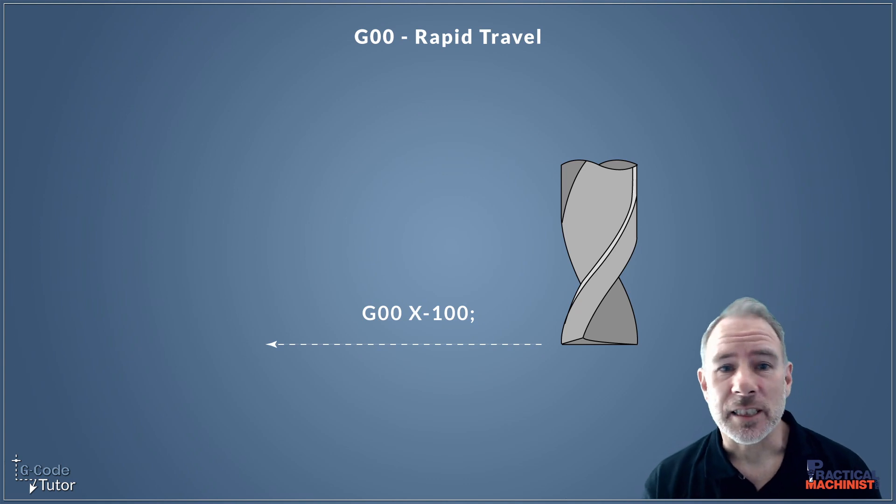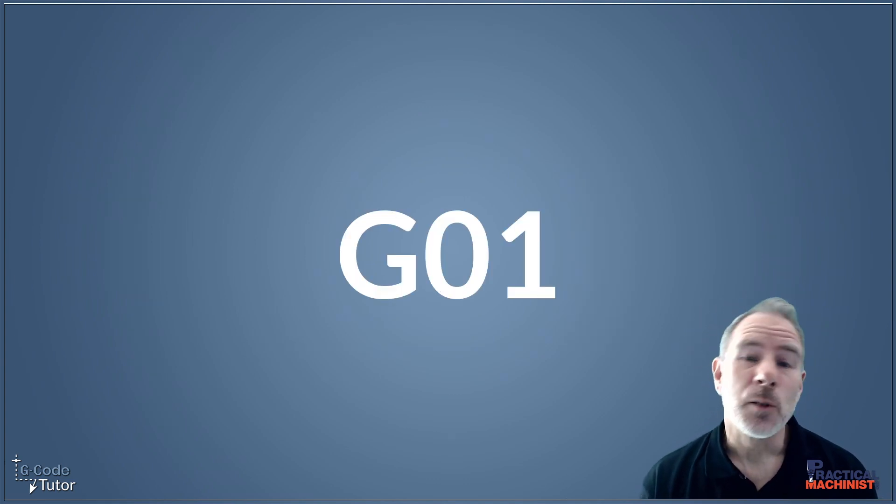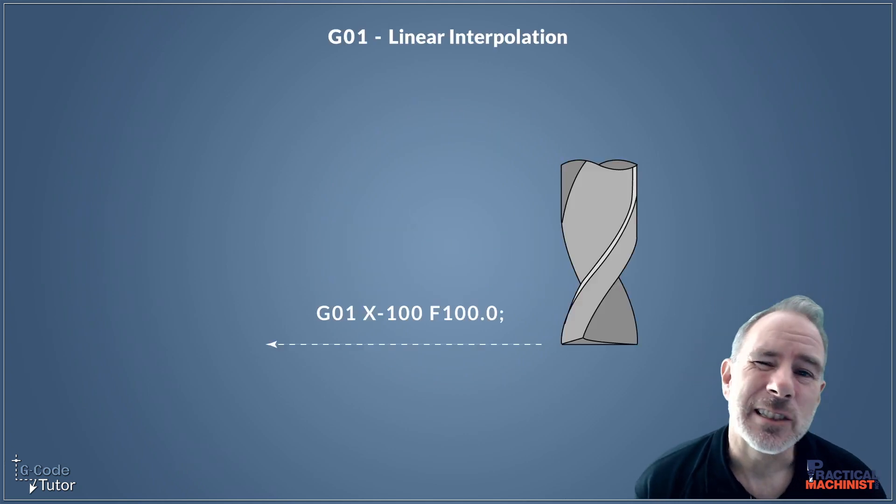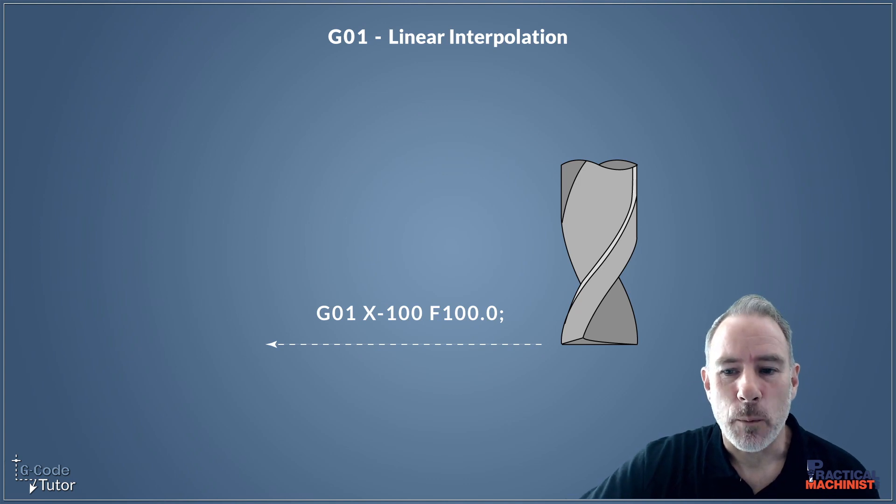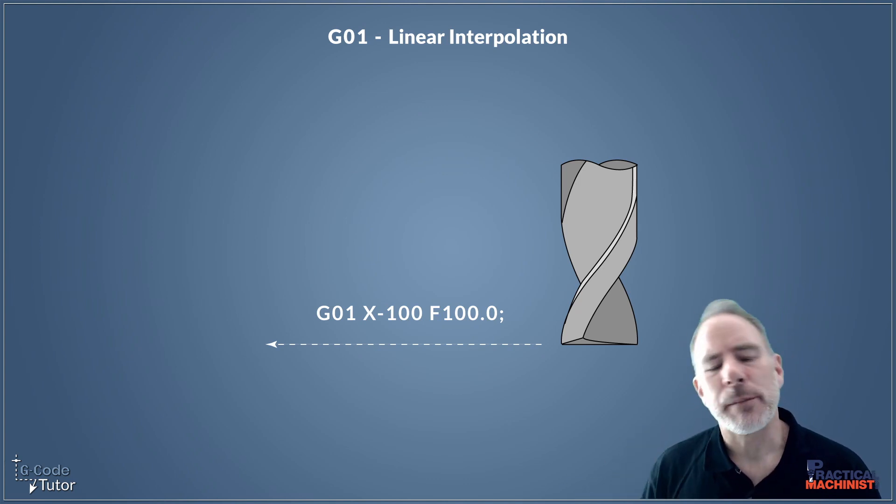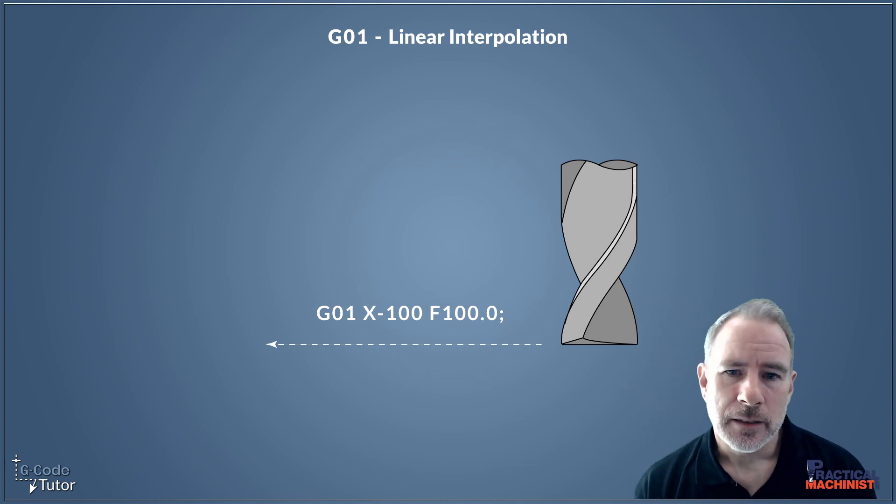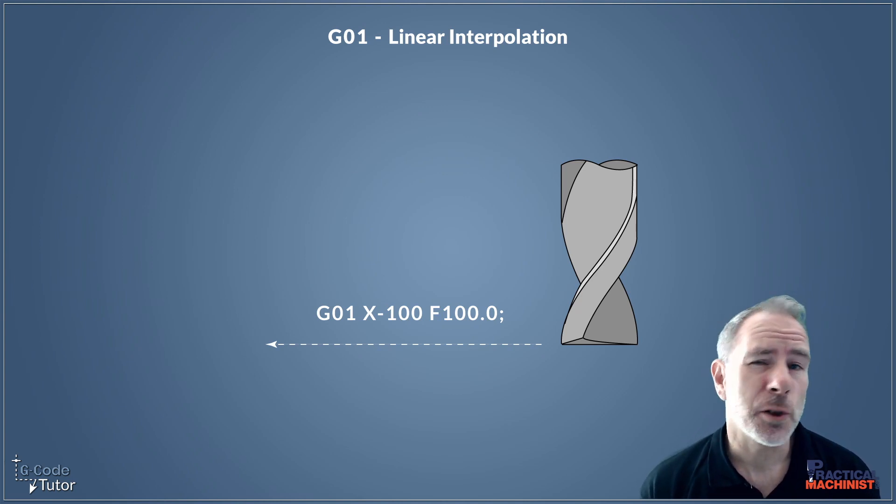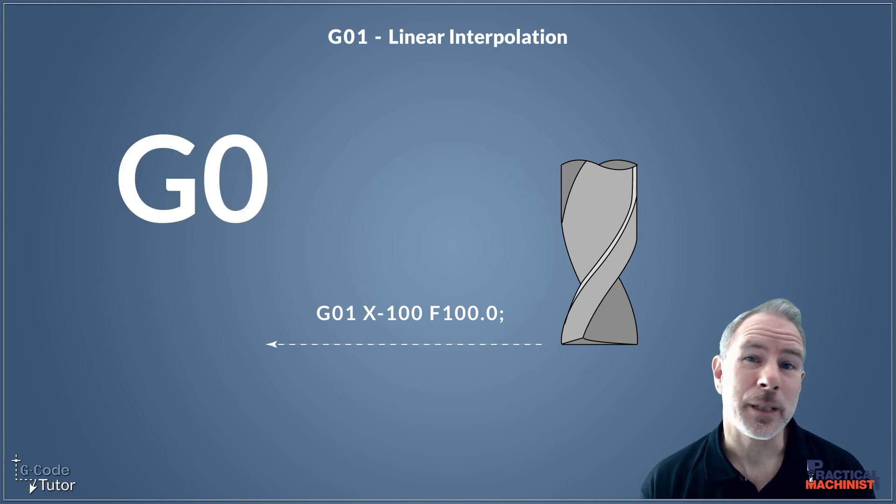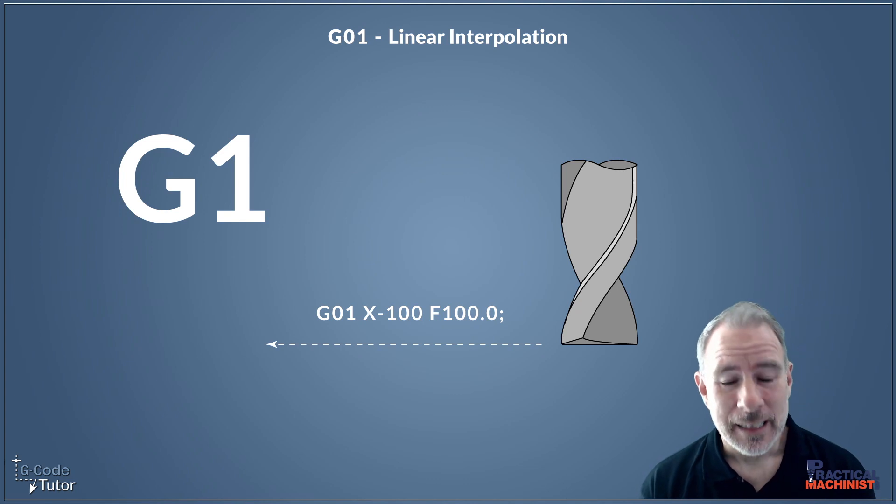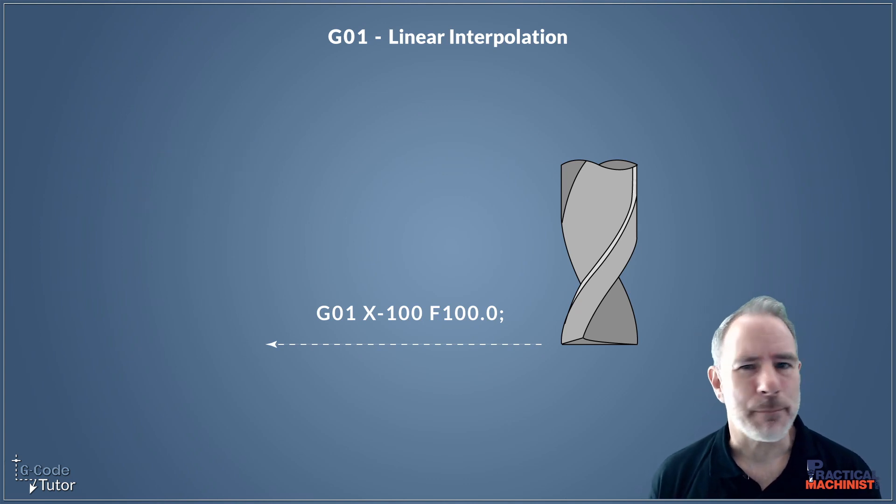G00 is very similar to G01. The only difference is we have to state a feed rate when we're using G01 and it's not a rapid move. The feed rate gives us the speed that we're going to be removing material at. When we program with G01 we need to add a feed rate and we can move in as many axes as we wish or as many axes as our machine has. Like a lot of G codes you might see G00 and G01 shortened. We can shorten G00 to simply G0 and G01 to simply G1. Back in the old days the machines didn't have the amount of RAM as they do now so every byte counted.